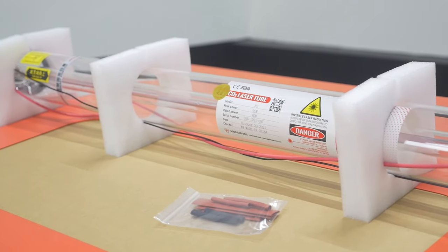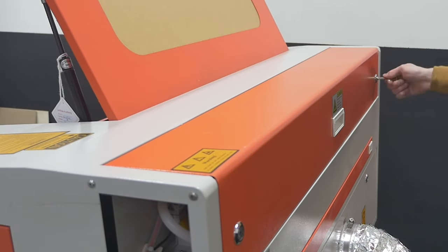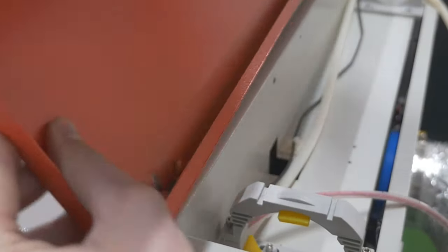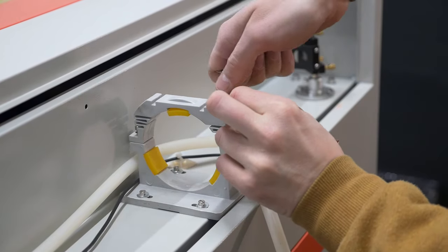To install the laser tube, open the top rear cover where the bay for laser tubes is. Remove the latches. Open the laser tube fasteners and draw them aside.